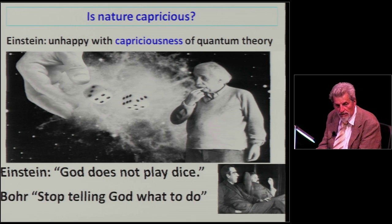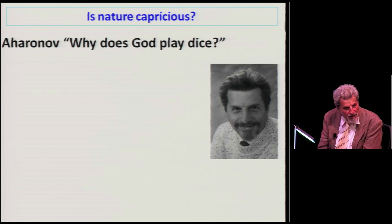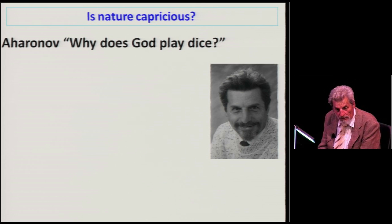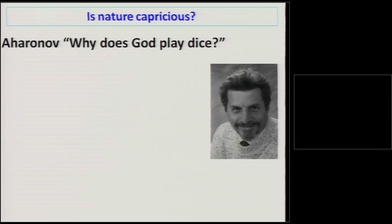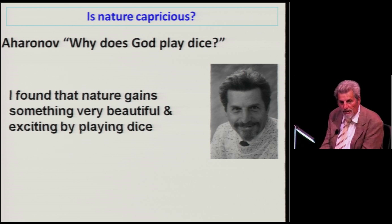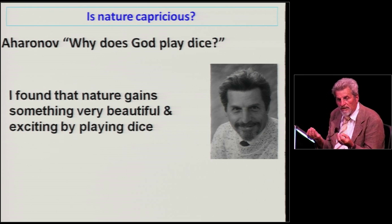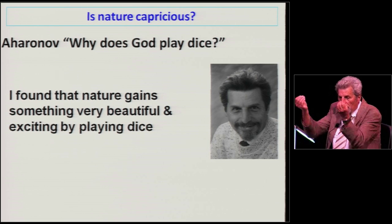In my research I try to reformulate this and ask the question: why does God play dice? Namely, if nature behaves in a capricious way there must be some reason for that, and then it will not be capricious anymore. So maybe nature is trying to tell us something new - it's trying to tell us that there was indeed a difference between the two atoms initially, a difference between the two quantum systems, but this difference can be found only later.